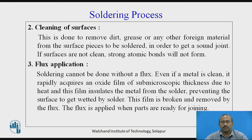Third stage of soldering process: flux application. Soldering cannot be done without a flux. Even if a metal is clean, it rapidly acquires an oxide film of submicroscopic thickness due to heat, and this film insulates the metal from the solder, preventing the surface from getting wetted by solder. This film is broken and removed by the flux. The flux is applied when the parts are ready for joining.